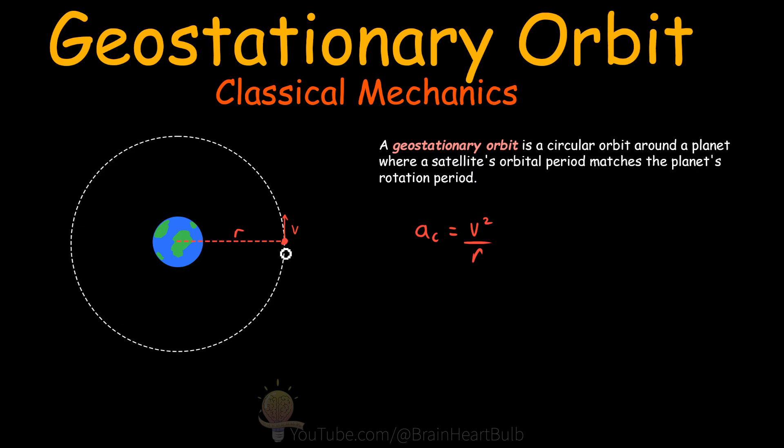Now we've got another acceleration working on our satellite at the same time. And this is the acceleration due to gravity of the planet. Now this acceleration can be expressed like this. G is equal to the gravitational constant multiplied by the mass of the planet divided by the distance from the centre of mass.